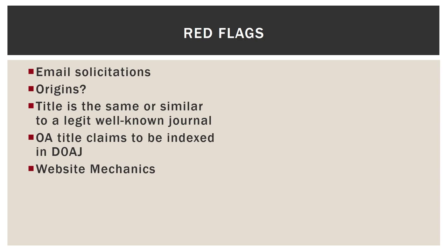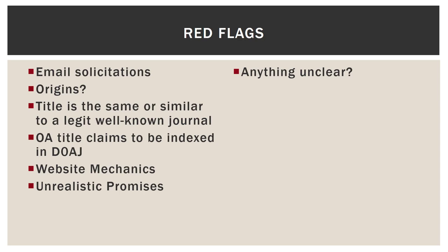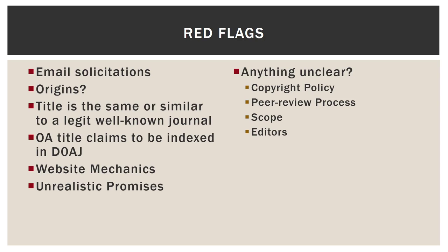Website mechanics: always check things like links. If you click on a link that says editorial process, you should be brought to a page that has information on the editorial process. Unrealistic promises: if the journal promises that from submission through editorial, through peer review to publication takes less than 45 days, that is a very unrealistic promise. Also check for anything unclear on the website — this could be policies like copyright, a description of processes like peer review, the scope of the journal, information about the editors, contact information, accessing the journal, or archiving. If there is anything unclear on the website and there is no one to clarify it, that is a red flag.